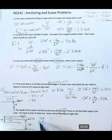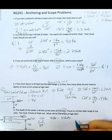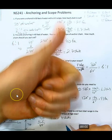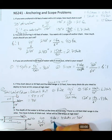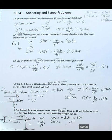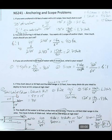We have 4 shots of chain out, so our rode is 4 times 90 equals 360 feet. Our depth at high tide is 45 feet. Scope equals road divided by depth: 360 divided by 45 equals 8, giving us a scope of 8 to 1. That's how you work those problems.